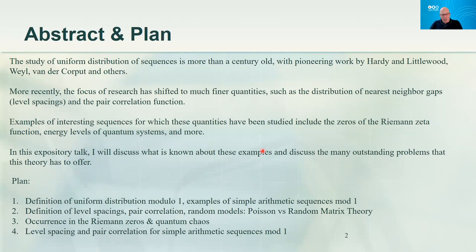The plan is to spend a few minutes on the classical theory of uniform distribution, then define these finer statistics and describe how they occur in random models, in the theory of the Riemann zeta function, and in quantum chaos. Then in the second half of the talk, I will discuss how these quantities are manifested in the standard examples of classical uniform distribution theory.